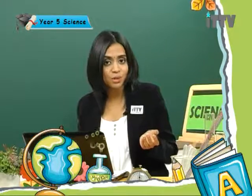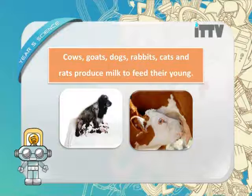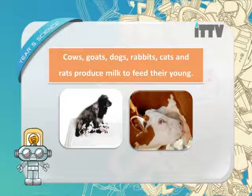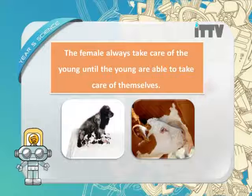Now, can you remember the classes of animals? We have mammals, reptiles, amphibians, birds, insects and so on. What is special about female mammals? Cows, goats, dogs, rabbits, cats, and rats produce milk to feed their young. This is how the young get enough nutrition to grow healthily. The female always takes care of the young until they are able to take care of themselves.